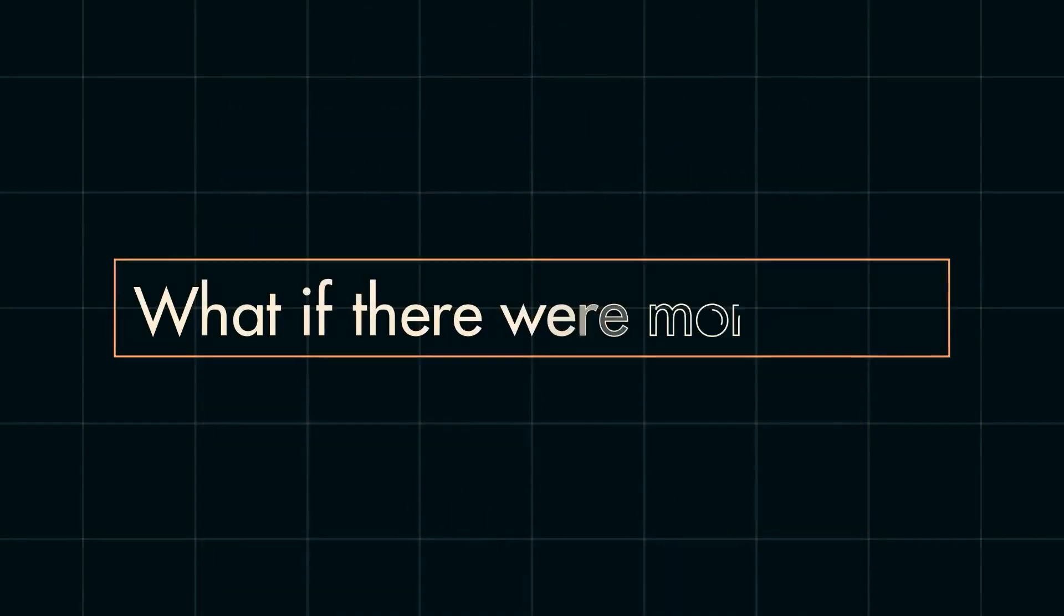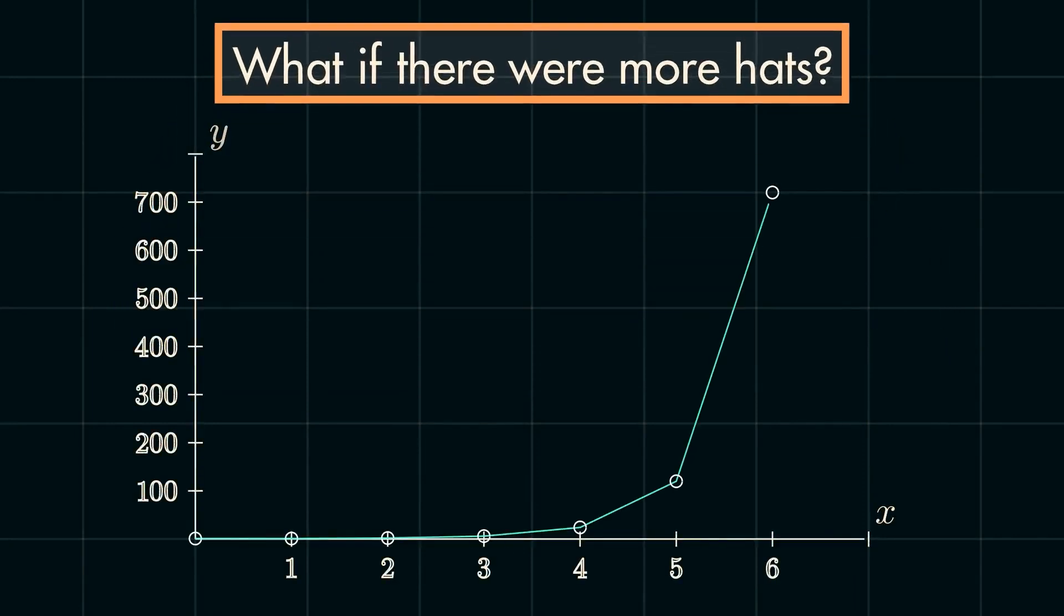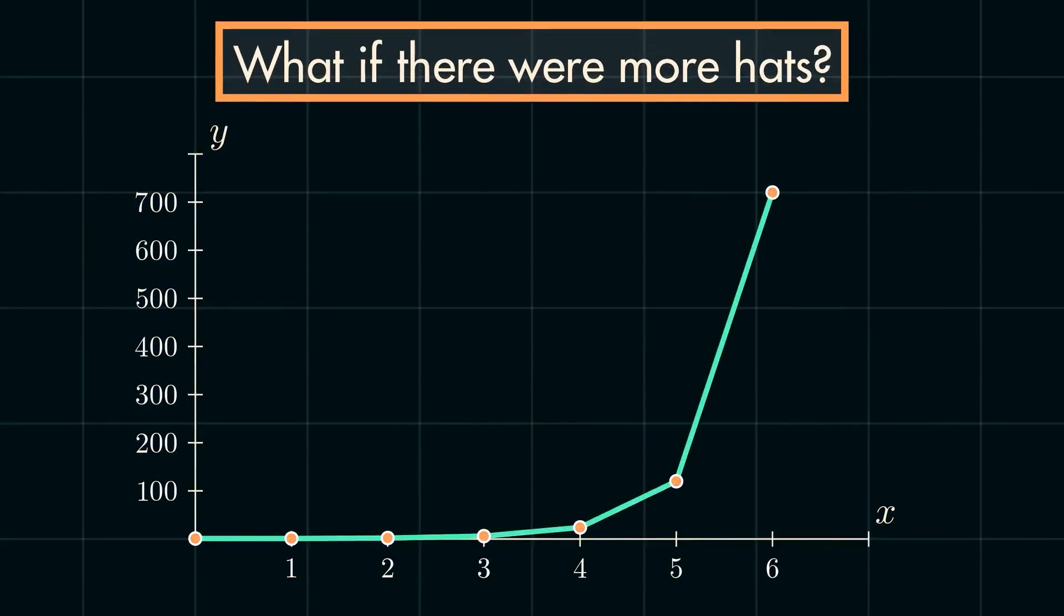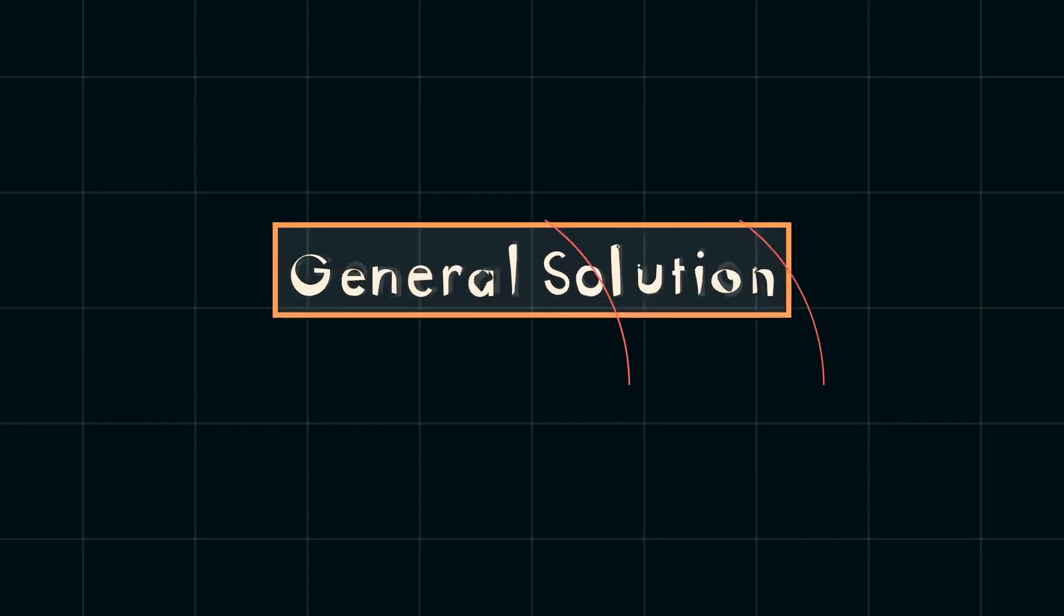But what if there are more than four hats? Well, if you have any idea of how quickly factorials grow, you'll know this method of writing out all the outcomes is insufficient. Even if we only had one more hat, we would have nearly 100 more outcomes to draw out. So, what we'd like now is a general solution. To do this, we'll need to bring in the inclusion-exclusion principle.